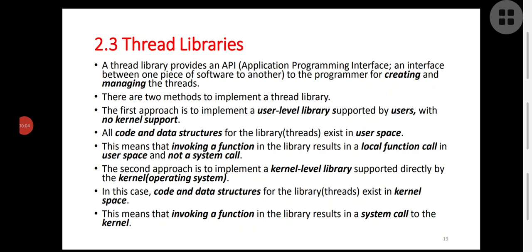In the last class we covered three models of multi-threading — that is, three types of relationships between user level threads and kernel level threads. Now we will move to thread libraries. Don't get confused with this topic and our previous topic. The previous topic was multi-thread models: how multiple threads are organized or structured in a process, in terms of support and management by users or the kernel.